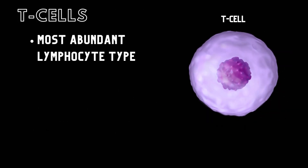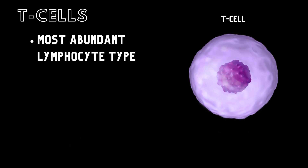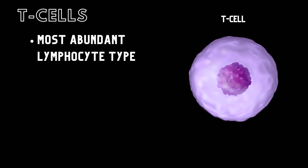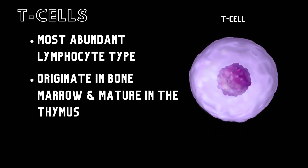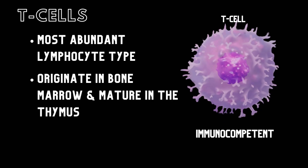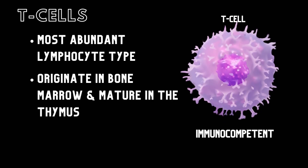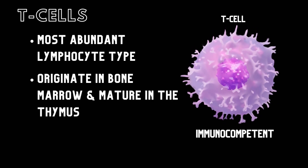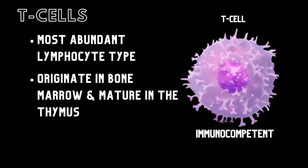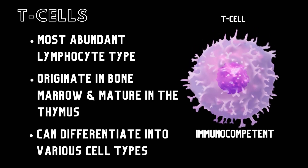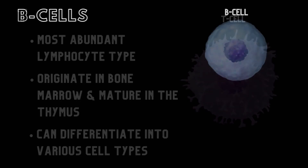T cells are the most abundant type of lymphocyte. They originate from the bone marrow and mature in the thymus in order to become immunocompetent, or activated. T cells differentiate into various types of cells when properly stimulated to target antigens and enhance the immune response.